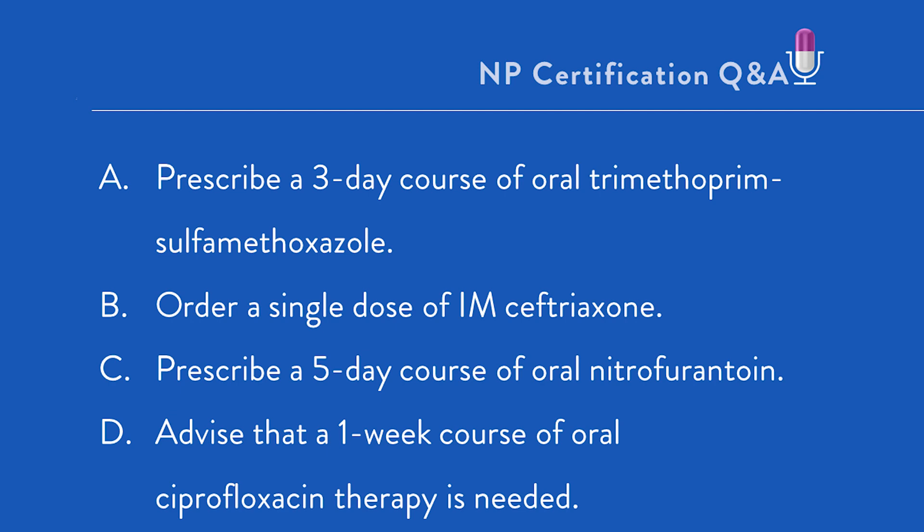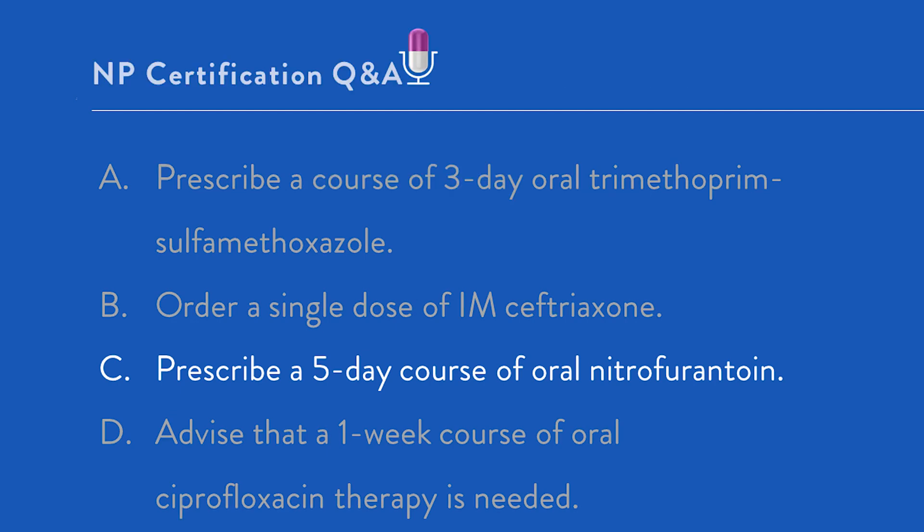Option C: prescribe a five-day course of oral nitrofurantoin, or Macrobid. This is actually the correct answer. It's the right drug and the right length of therapy, with very high rates of UTI resolution and very low rates of resistance.